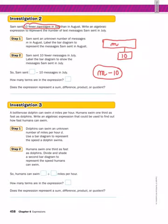How many terms are in the expression? There are two terms because it's separated by a subtraction sign. And does the expression represent a sum, difference, product, or quotient? It is a difference because difference is subtraction.